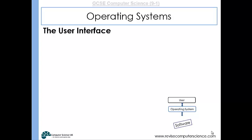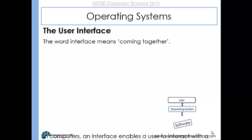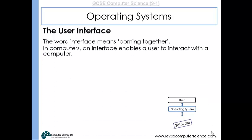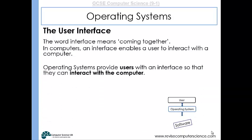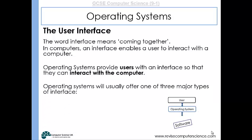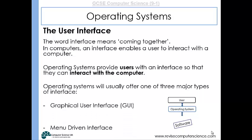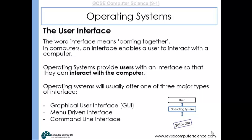The operating system also provides a user interface. The word interface means coming together, and a user interface is what allows a user to interact with a computer. Operating systems provide three major types of interface: a graphical user interface, a menu-driven interface, and a command line interface.